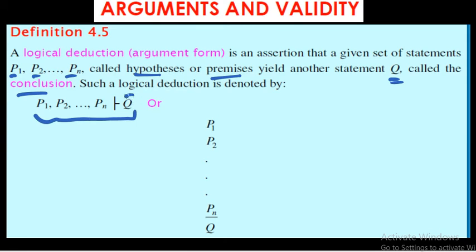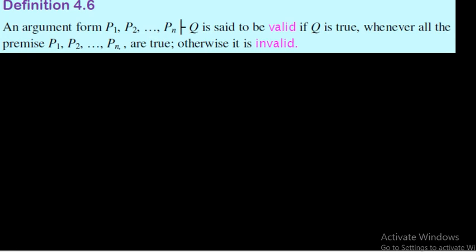We will investigate the truth values of the conclusion. If the conclusion becomes true, we can say the given argument is valid; otherwise it is invalid. An argument form with premises p1, p2, through pn and conclusion q is said to be valid if, whenever all the premises are taken as true, the conclusion q is also true.